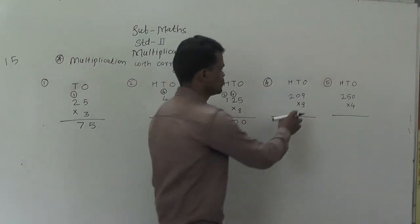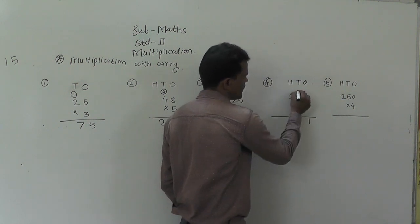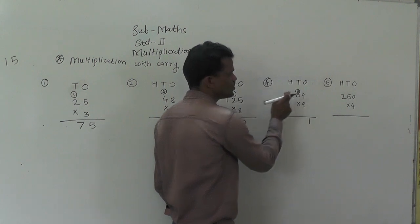9 times 9 is 81. 1 right here, 8 carry. 9 times 0 is 0.